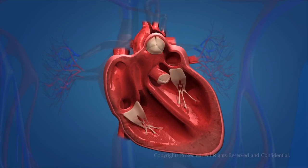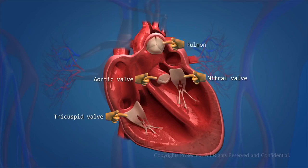There are four valves in the heart. These valves are: tricuspid valve, mitral valve, aortic valve, and pulmonic valve. These valves are one-way valves.